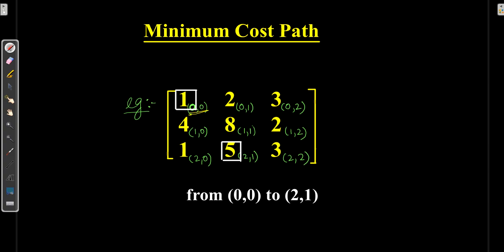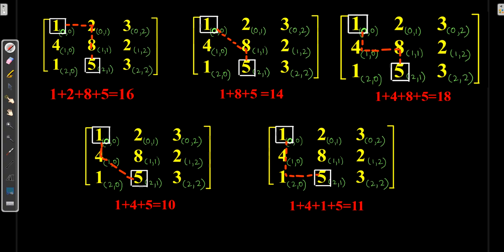If I have to travel from (0,0) of this matrix to (2,1), there are many paths. Path 1: go from (0,0) to (0,1), then (1,1), then (2,1). Similarly, we can take other paths like (0,0), (1,1), (2,1), and others including paths through values 1, 4, 1, 5. I will calculate all paths and take the minimum path to reach the destination, which is 10.